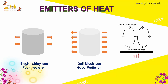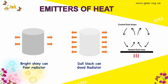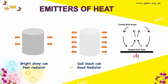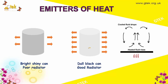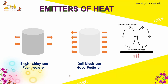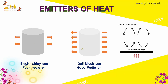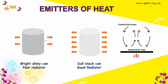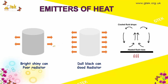Now let's look at the emitters of heat more closely. The bright shiny surface, considered to be the poor radiator, is shown here, and the dull black one, which is a good radiator, is shown alongside. You can see the difference — this emits poor radiation whereas the dull black one emits good radiation, with the radiation marked by arrow indicators.